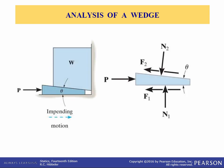So first let's analyze a wedge. A wedge is a simple machine in which a small force P is used to lift a large weight W. To determine the force required to push the wedge in or out, it's necessary to draw a free body diagram of the wedge and the object on top of it. In this analysis, we're going to be drawing two free body diagrams. It's easier to start with the free body diagram of the wedge since you know the direction of its impending motion. The frictional forces are always in the direction opposite to motion or impending motion of the wedge. The frictional forces are along the contacting surfaces, and the normal forces are perpendicular to these surfaces.